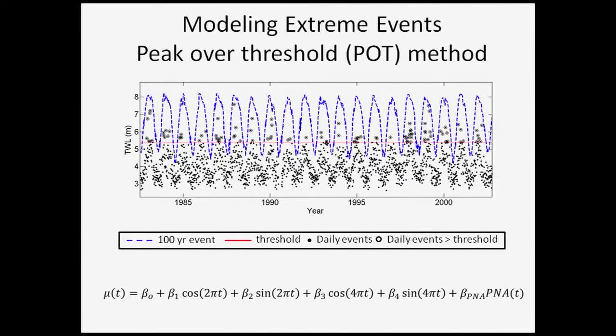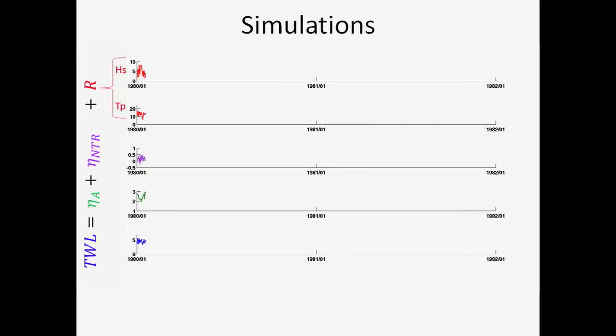We add in seasonality to this model because we know that extreme events are more likely to occur during winter when we have big storms. You can see here a projection of the 100-year event and how it changes over time. This is a great estimate of the 100-year event, but we're really only using it based on a 30-year record, so we will simulate all of these individual components to get more random realizations.